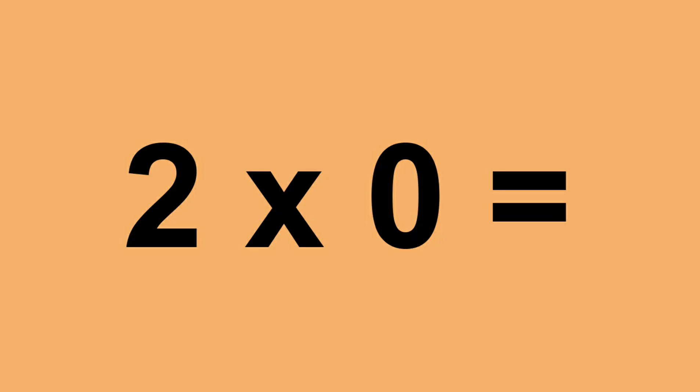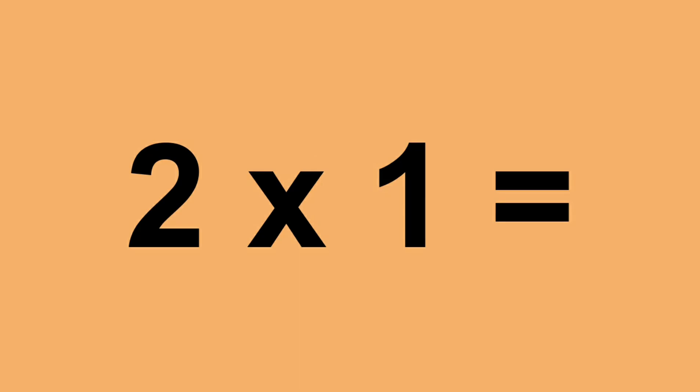One times eleven equals eleven. One times twelve equals twelve. Two times zero equals zero. Two times one equals two.